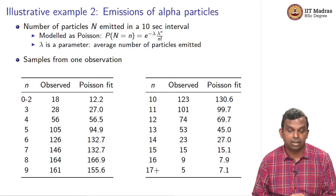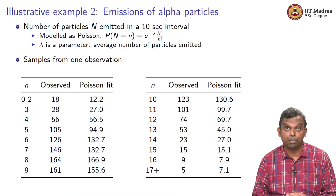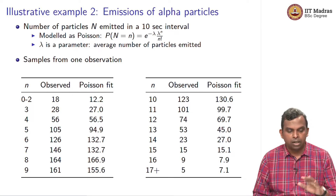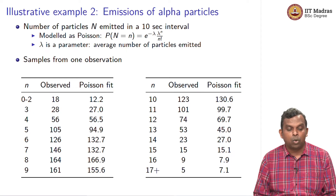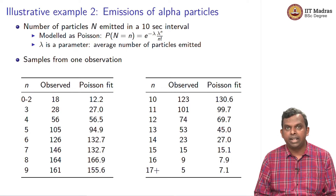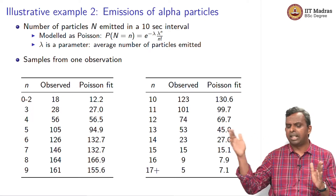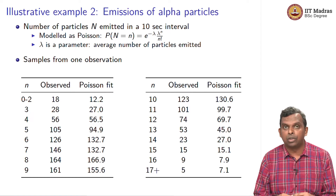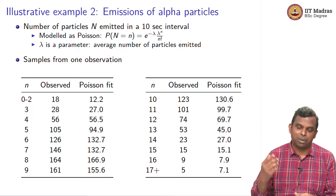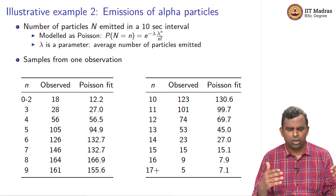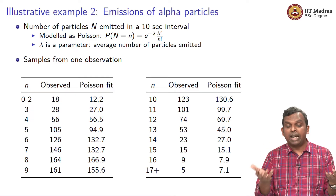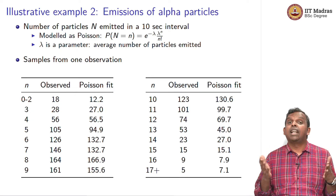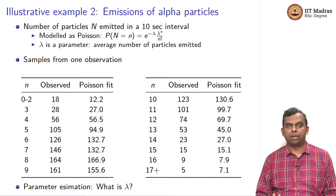Here are samples from one observation — I have taken this from John Rice's book. You can see the data: 0 to 2 particles came out in 18 intervals. You observe the number of alpha particles over several intervals — I think there are about 2700 intervals. 18 of those intervals had 0 to 2 particles observed, 5 intervals had 17 or more particles observed, and so on. That is the data. From data like this, you have to find lambda. What is lambda? That is the parameter estimation problem.